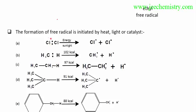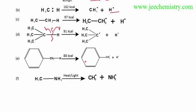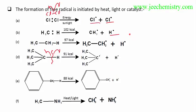For example, with chlorine — by providing energy or light to this compound, chlorine free radicals are formed. Similarly, methyl free radicals and hydrogen free radicals can be formed. Free radicals are not limited to chlorine; other types of free radicals are also possible.